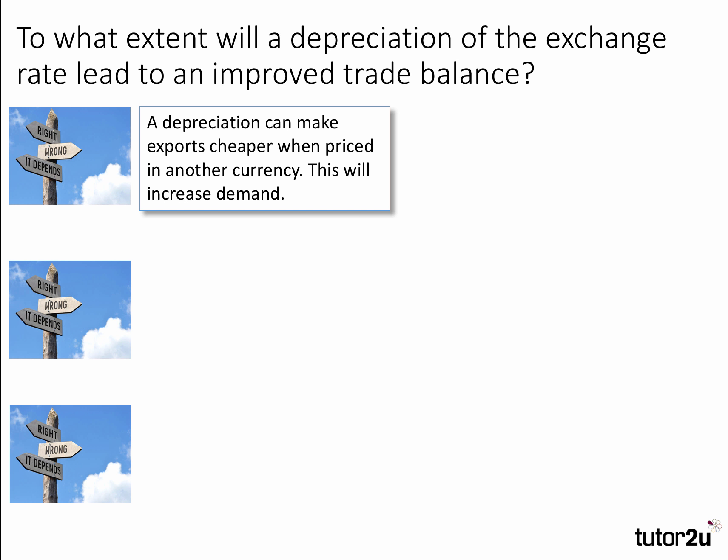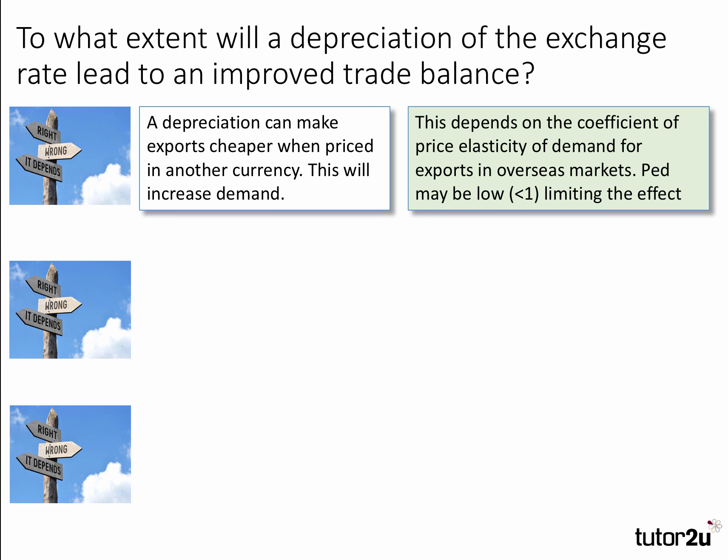Here's the first point. A depreciation can make exports cheaper when priced in a foreign currency, which will increase demand. But this depends on the coefficient of price elasticity of demand for exports in overseas markets. The coefficient may be low — less than one — limiting the effect. The crucial point, of course, is whether the coefficient is greater than one, as that really makes a difference to the change in export sales.